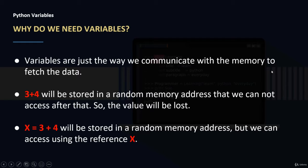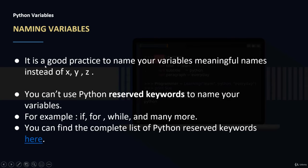Variables are the way we communicate with memory to fetch data. For example, if we write 3 plus 4 in our code, the result is stored in a random memory address we cannot access afterward, so the value is lost. But if we say x equals 3 plus 4, the output is stored in a random memory address that we can access using the reference x — the variable name.